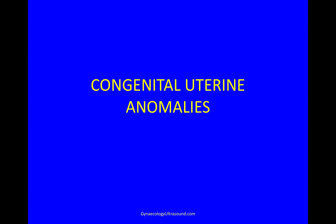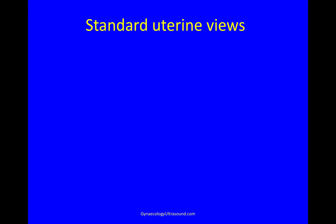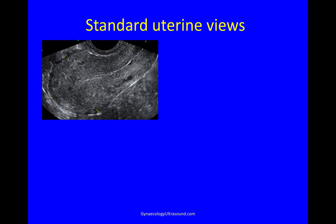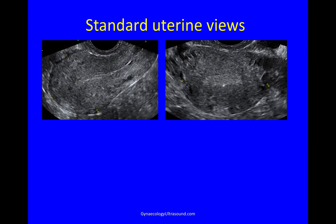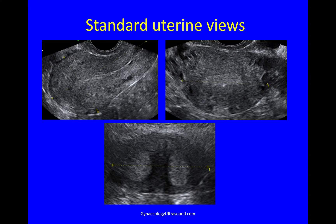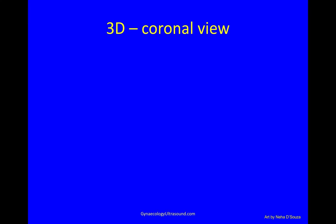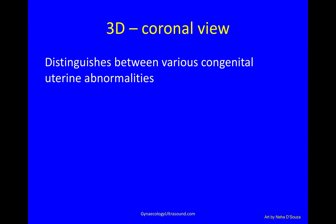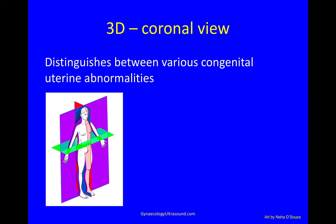3D is very useful in the diagnosis of a uterine anomaly. In standard 2D uterine views you get the longitudinal plane and the transverse plane, but when in the transverse plane you see a separation of the endometrial cavity near the fundus, you don't know whether this is an arcuate uterus, a subseptate uterus, or a septate uterus. You need the coronal plane to distinguish between these different abnormalities.